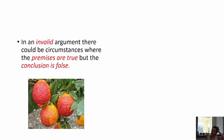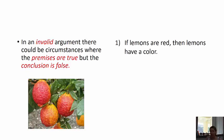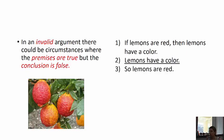In an invalid argument, there could be circumstances where the premises are true but the conclusion is false. Let's look at this argument: if lemons are red, then lemons have a color. Lemons have a color, so lemons are red. In a valid argument, if the premises are true, then the conclusion has to be true — you're locked in.